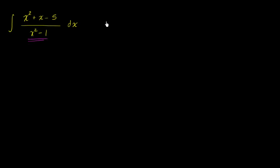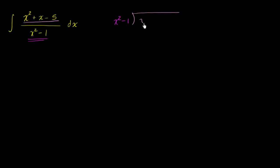Let's take x squared minus one and divide it into x squared plus x minus five.